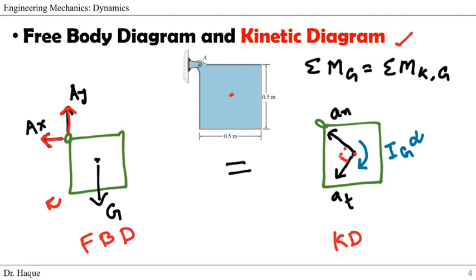At point Z we have a normal component of acceleration, which always points toward the center of rotation at pin point A. The tangential component is always perpendicular to the normal component. Since there is rotational acceleration, the kinetic moment is I_Z·α about point A. Because we're taking the moment at Z, components at A pass through point Z, so the kinetic moment is only I_Z·α.